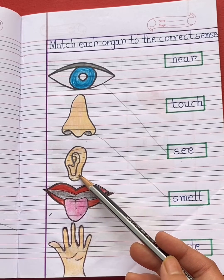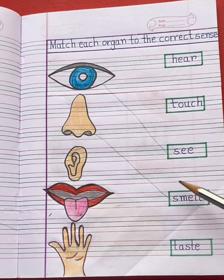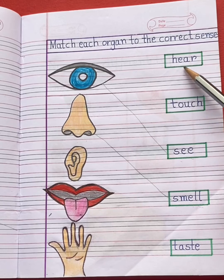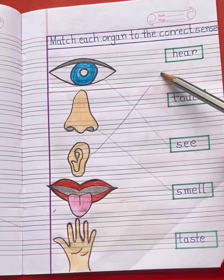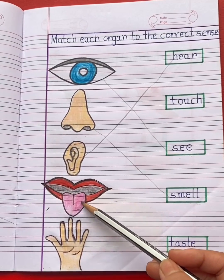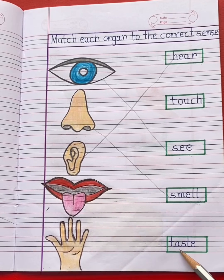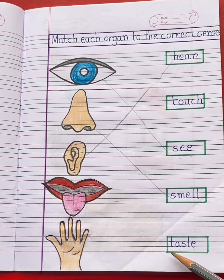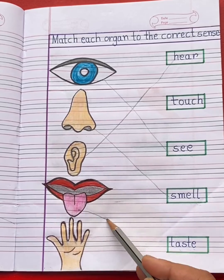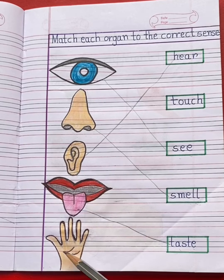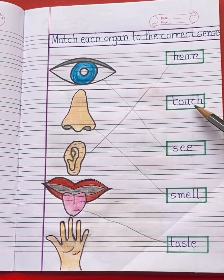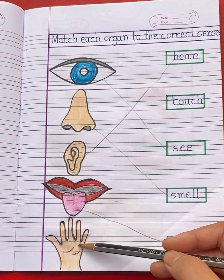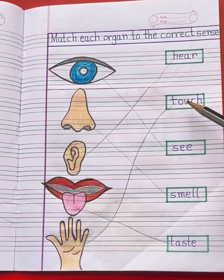Next organ is ear — ear helps us to hear. H-E-A-R. Hear ka matlab hota hai sunna. So draw a line. Next organ is tongue — tongue helps us to taste. And finally, skin helps us to touch. T-O-U-C-H. Touch ka matlab hota hai chhoona. So draw a line.